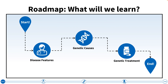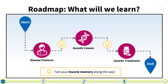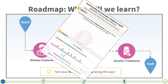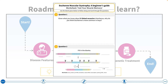Here's a roadmap of where our guidebook will take us. We will start with an introduction to the symptoms and features of Duchenne muscular dystrophy. We will then take a close look at how changes to the DNA can lead to this disease. Last but not least, we will talk about genetic treatment options. You can use the progress bar at the bottom of your screen to track how far along you are in our learning journey. Throughout the video, keep an eye out for questions to test your muscle memory along the way. If you'd like to follow along with a pen and paper, feel free to follow the link in the description box below and print out the test your muscle memory worksheet. Let's get started.